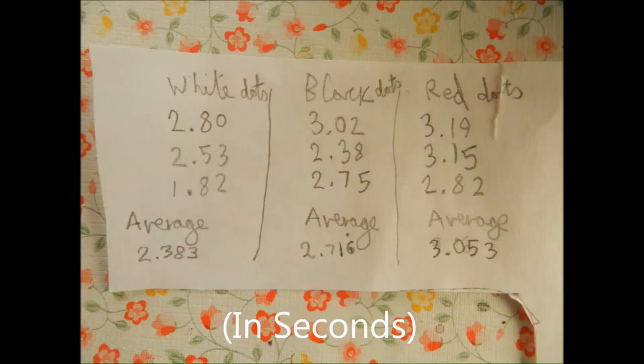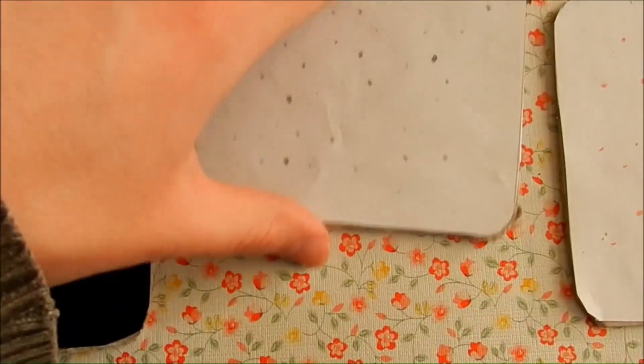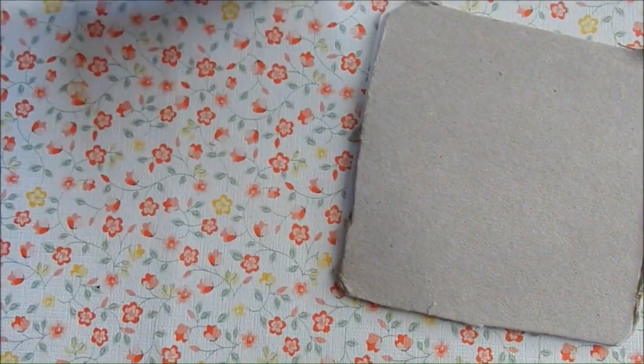I did the experiment three times for each coaster. It took me the shortest on average to check the surface with white dots. Then the surface with black dots took longer on average, and the surface with red dots took the longest. I don't know if the experiment was the most accurate, but I thought it may be an interesting idea.